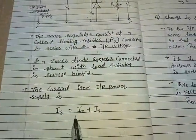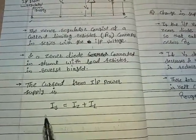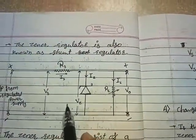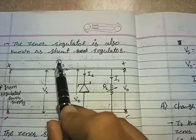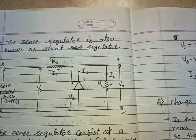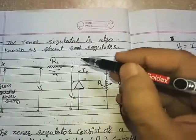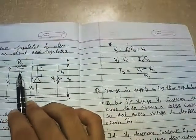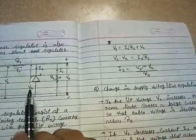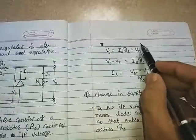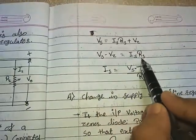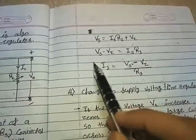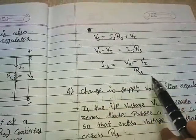To calculate the value of IS, I apply loop analysis in this loop where VS, IS, RS, and VZ are included — VZ being the voltage across the zener diode. So VS equals IS·RS plus VZ. Rearranging, IS·RS equals VS minus VZ, and therefore IS equals (VS minus VZ) divided by RS.